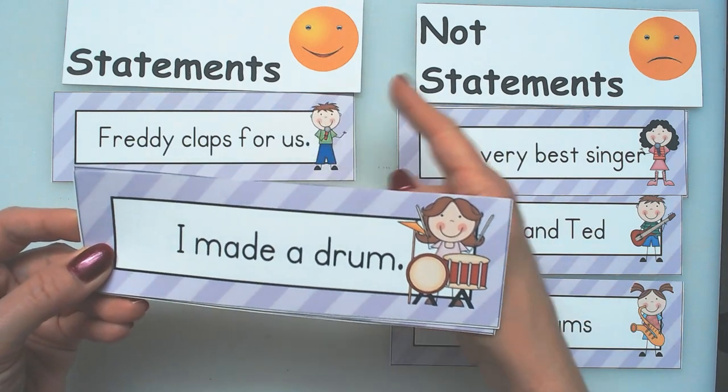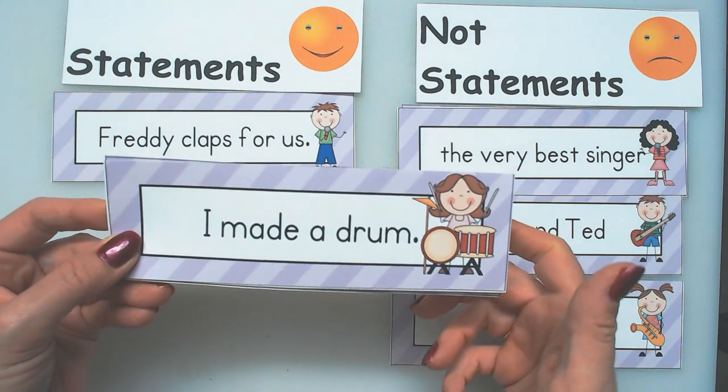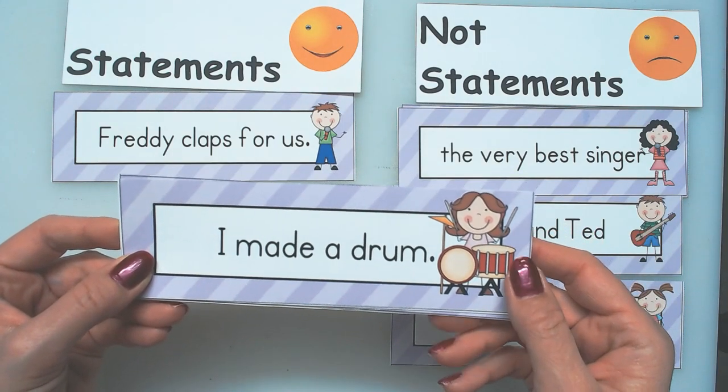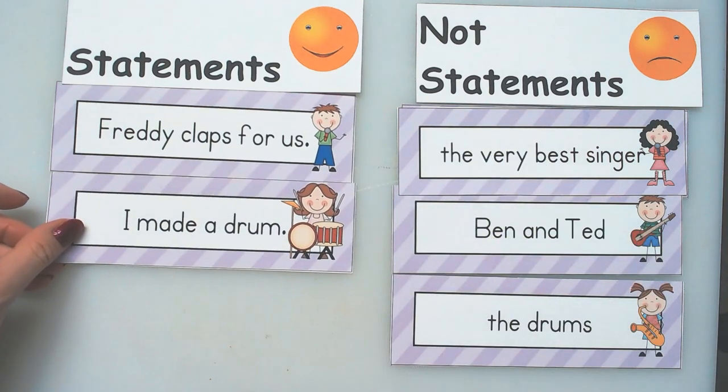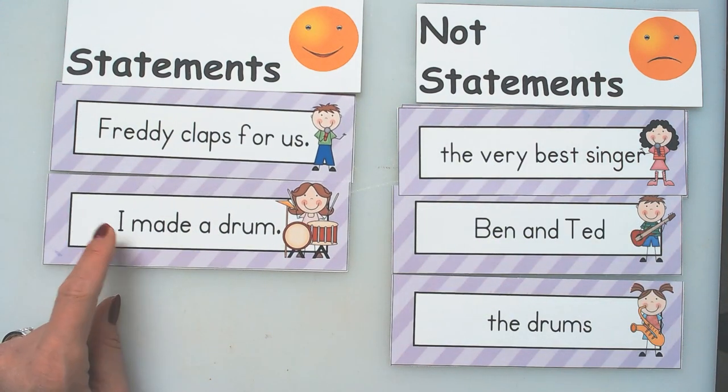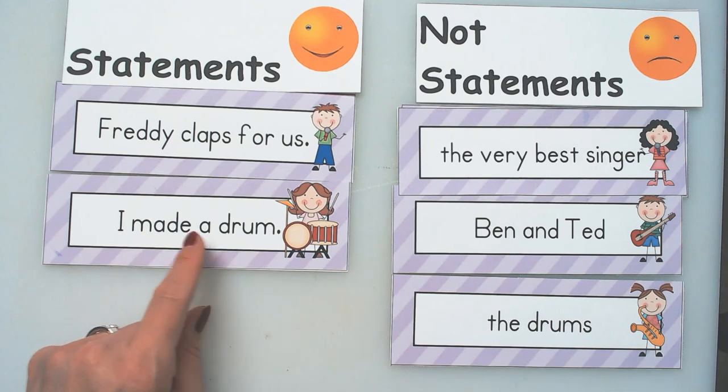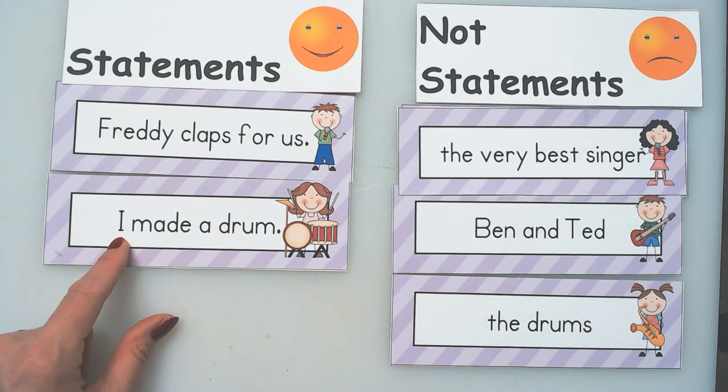I made a drum. Statement or not statement? I made a drum. It's a statement. It followed all the rules. It said who it was, that's I, and what they did. Made a drum. Started with a capital letter. Ended with a period. It's a statement.